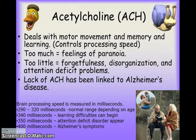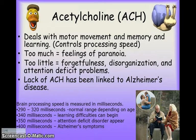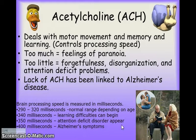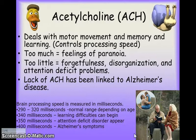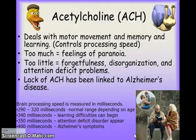Acetylcholine is the first neurotransmitter. It affects motor movement, memory, and learning by impacting the brain's processing speed. If the brain processes too fast or too slow, problems occur. Too much acetylcholine can lead to feelings of paranoia. Too little can create forgetfulness, disorganization, and attention deficit issues.